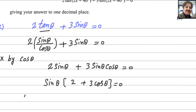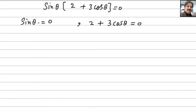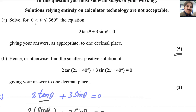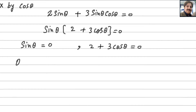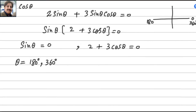We now have two factors: sin θ = 0 and 2 + 3 cos θ = 0. For sin θ = 0, taking the inverse gives zero, but zero is not included in our interval. Sine equals zero at 0°, 180°, and 360°, so the solutions from this factor are θ = 180° and θ = 360°.